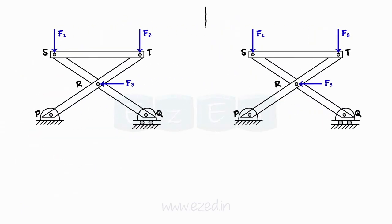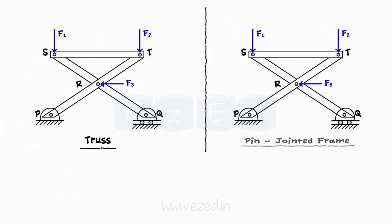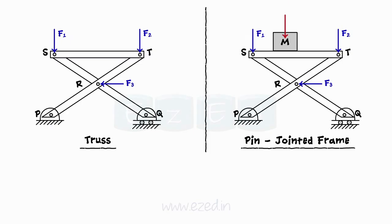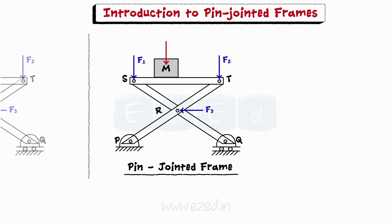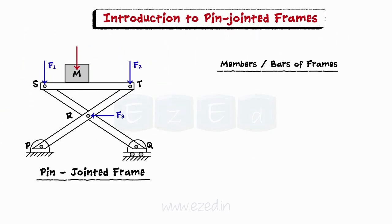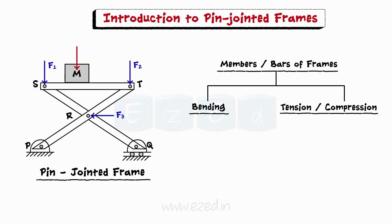The basic difference between a truss and a pin-jointed frame is in the case of external loading. In trusses, the forces act only at the joints, whereas in frames, the external force can be applied on members as well as on pin joints. Hence, the members or bars of frames are subjected to bending forces as well as tension or compression.